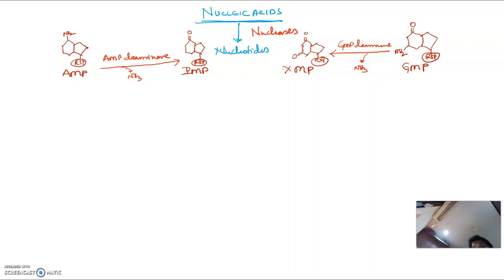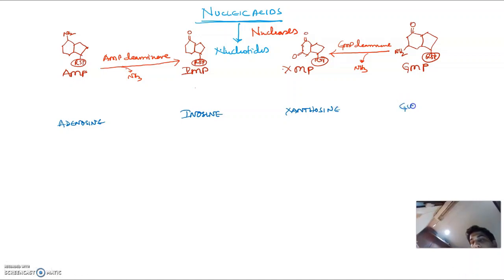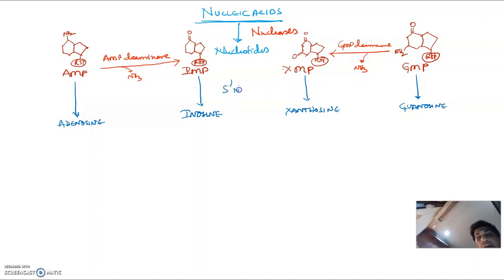These nucleotides are converted to their respective nucleosides — that is, adenosine, inosine, xanthosine, and guanosine. The enzyme required for this conversion is 5'-nucleotidase, a very important enzyme.